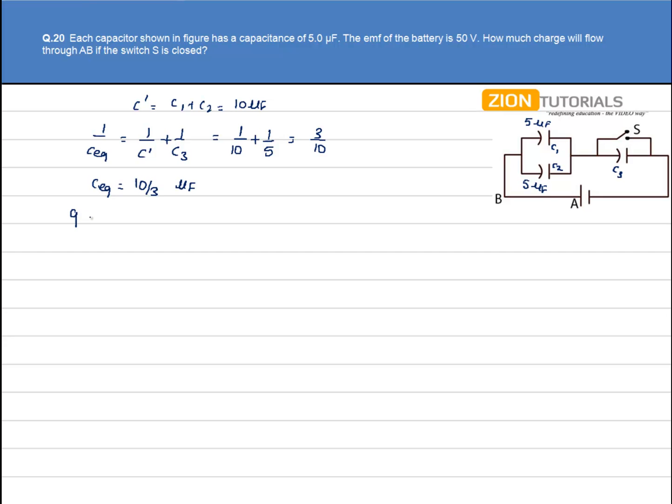So Q on each of the capacitor is given by CV that is 10 by 3 into voltage that is 50. It comes out to be 500 by 3 microcoulomb.